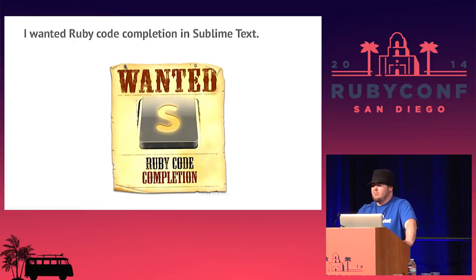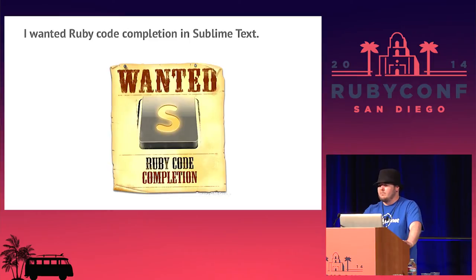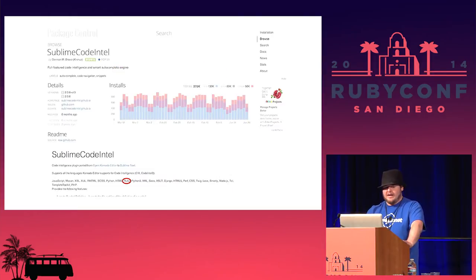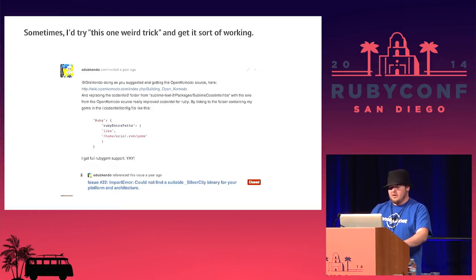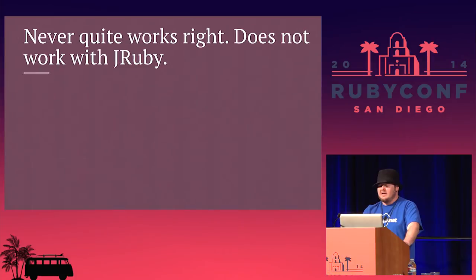I started programming about three and a half years ago. I dabbled in Java, did a little Node, and then came to Ruby where I fell in love and found home. Java showed me what was possible. When I came back to Ruby and started using Sublime Text, I wanted auto-completion for Ruby. There was a plug-in that claimed to provide it, but I tried everything to set it up and it just didn't ever quite work. And it didn't work with JRuby, which was something I had started getting really interested in.